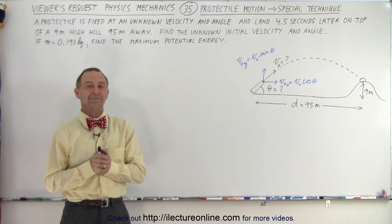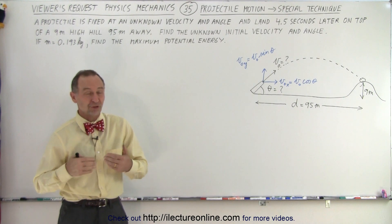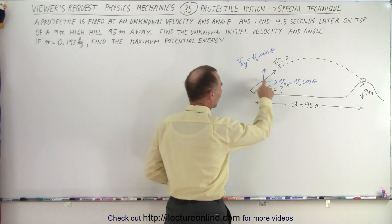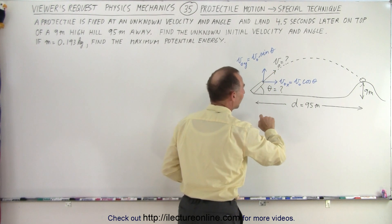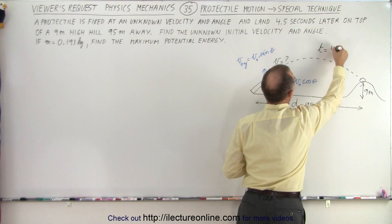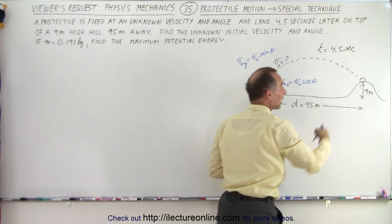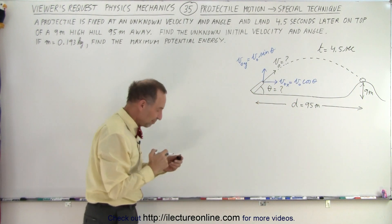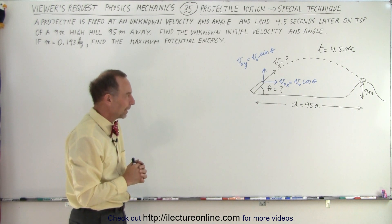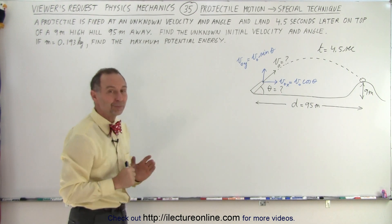Welcome to our lecture online. Here's another viewer request video dealing with projectile motion. An object is fired at some unknown speed and unknown angle such that 4.5 seconds later it lands on top of a nine-meter high hill 95 meters away. You're supposed to find the initial velocity and the initial angle. There's a very interesting special technique we're going to use to solve this problem.